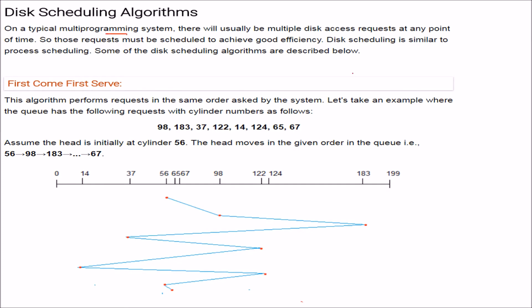We have disk scheduling algorithms. When you are talking about a typical multiprogramming system, there will be multiple disk access requests at any point of time, there can be many. So those requests must be scheduled in order to achieve good efficiency. Disk scheduling is, if you want an analogy, similar to process scheduling. So we have certain disk scheduling algorithms for you.